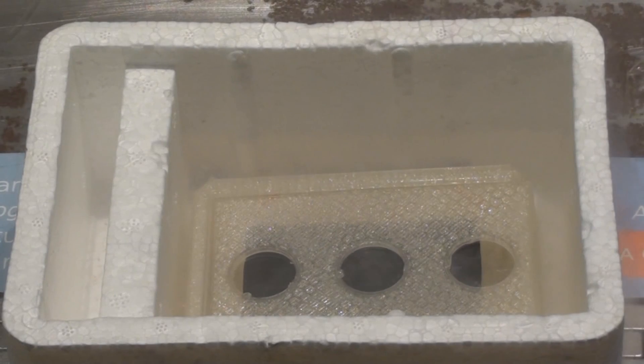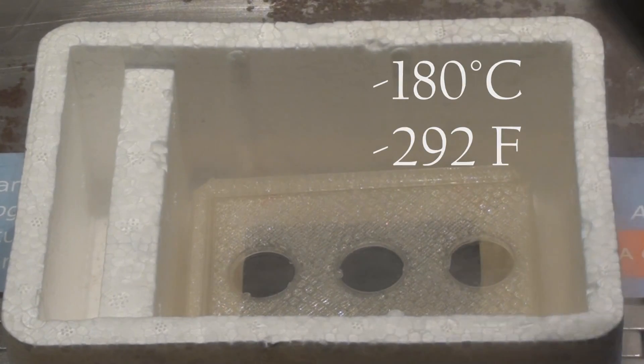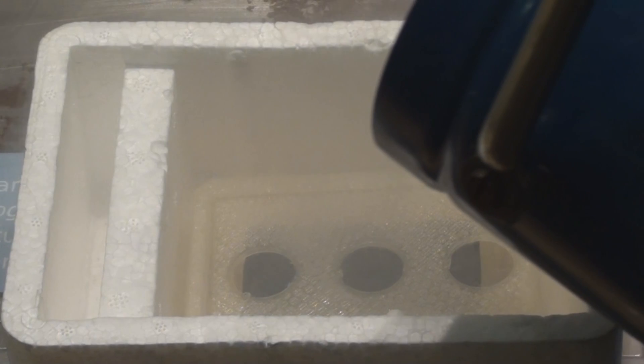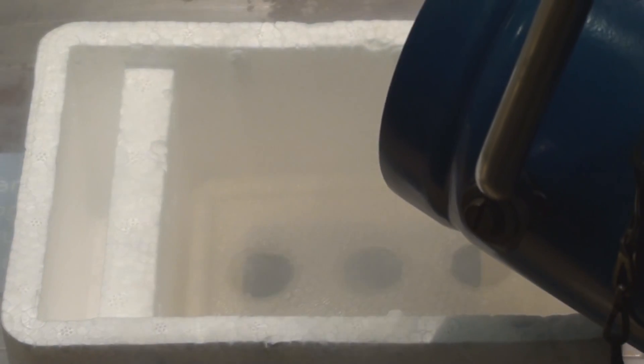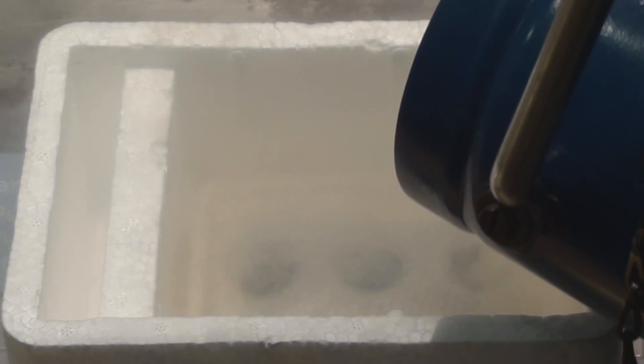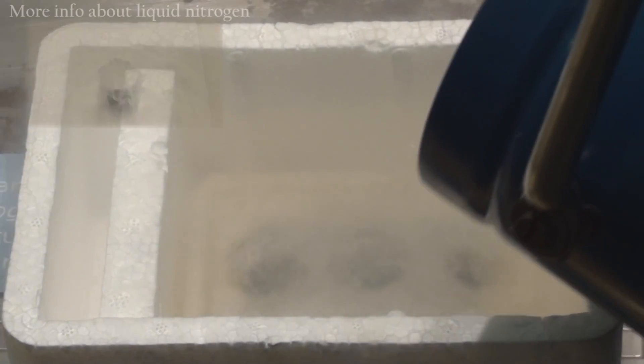When you cool it down to a temperature of 93 Kelvin it becomes superconducting, meaning that it can conduct electricity without resistance. To cool the material down to its superconducting state we use liquid nitrogen.